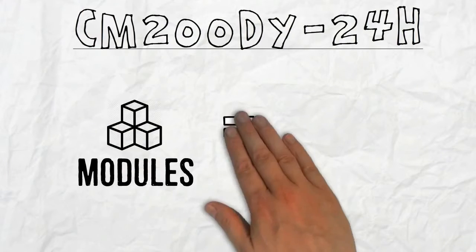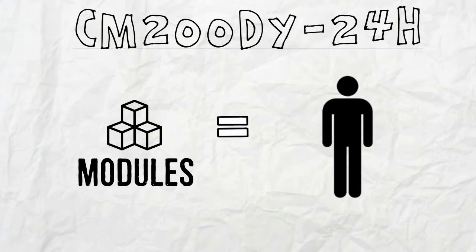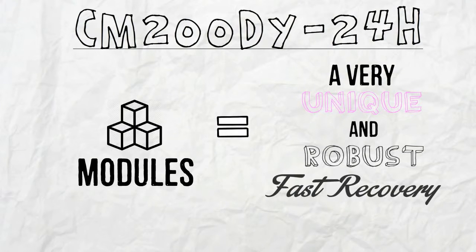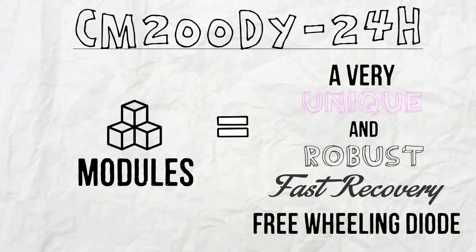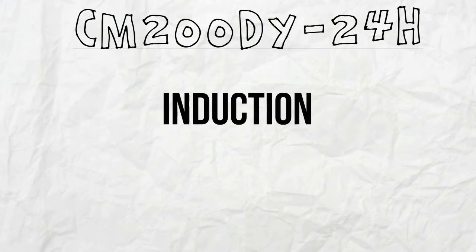CM200DY24H has modules where each contains two IGBT transistors, individually having a very unique and robust fast recovery freewheeling diode, eliminating flybacks or voltage spikes that may occur during induction loading.